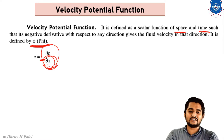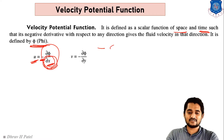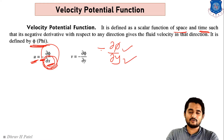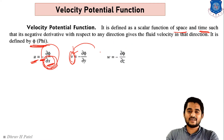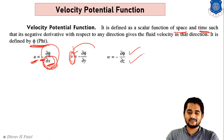Similarly, minus del phi by del y — the negative derivation with respect to y — gives velocity in the y direction, that is v. And derivation of velocity potential function with respect to z, with negative sign, gives velocity in the z direction, that is w.